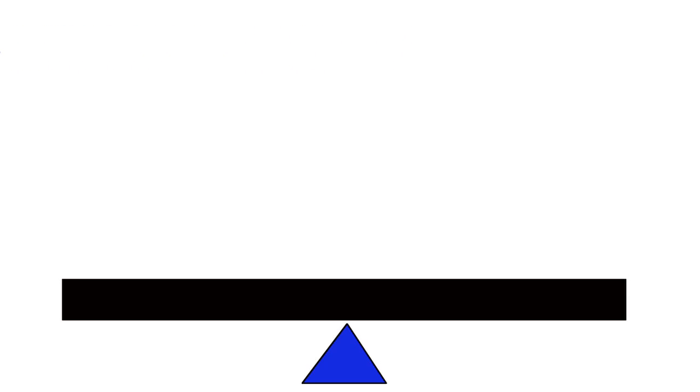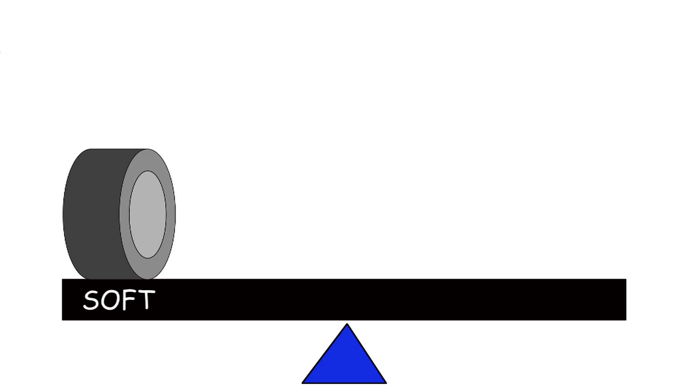When Goodyear makes a tire, they have a couple of possibilities. They could make a tire that's very soft and very grippy. The problem is a tire like that is going to wear quickly. And that means also when you skid it, it's going to create a lot of smoke.